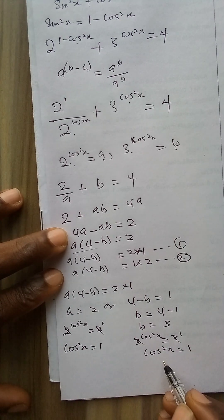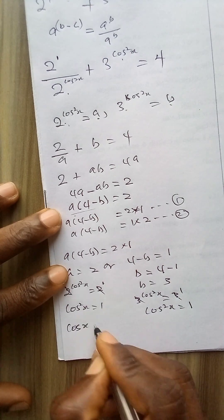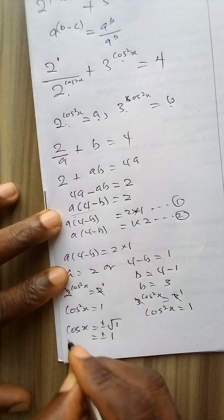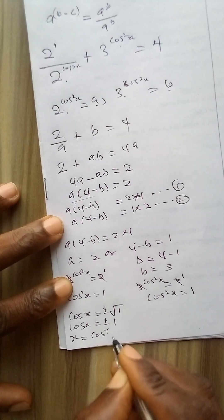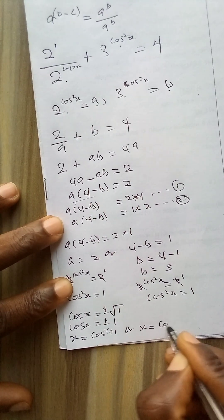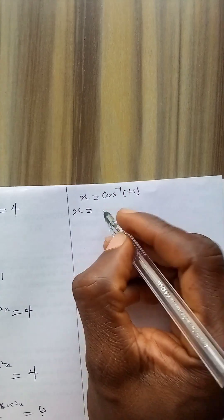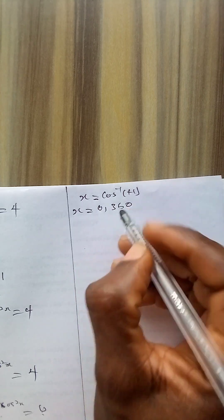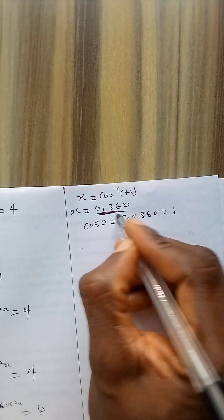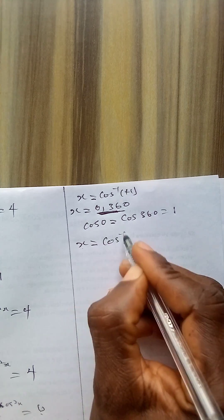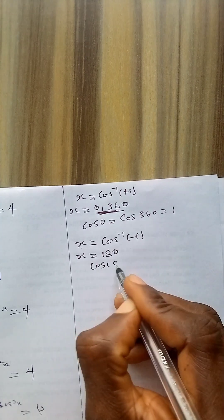Since both cases from equation 1 give the same expression, we solve cos squared x equals 1. So cos x equals plus or minus the square root of 1, which is plus or minus 1. When cos x equals plus 1, x equals 0 or 360. When cos x equals minus 1, x equals 180. These are our first set of solutions.